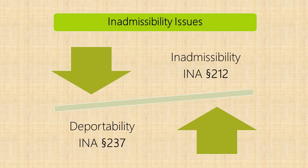Inadmissibility comes from INA 212 and deportability comes from INA 237. To distinguish: inadmissibility is basically you can't come in; deportability is that you've already been allowed in but now you need to leave. Think of it like a giant bar — inadmissibility is governed by the bouncer at the door, whether you meet the dress code, whether you're too drunk to come in. Deportability is the rules that will get you kicked out once you're inside. Where it gets complicated is when someone is already here — in the case of SIJS grantees seeking to adjust status, the rules of inadmissibility apply because they're adjusting from immigrant visa eligibility to legal permanent residency.